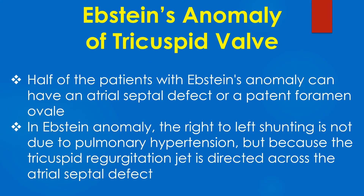About half of the patients with Ebstein's anomaly can have an atrial septal defect or patent foramen ovale. In Ebstein's anomaly, the right-to-left shunting is not due to pulmonary hypertension, but because the tricuspid regurgitation jet is directed across the atrial septal defect.